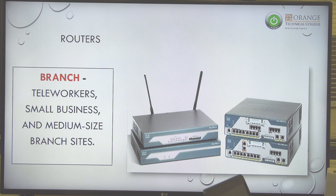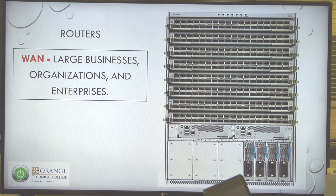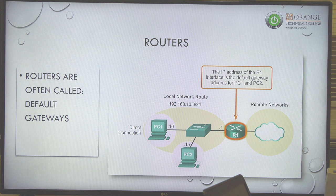As we leave the home and get into serious small business, you'll see routers from Cisco, HP, Teltrend, and Dell, which has a whole line of small business routers for branch sites. Then in WANs, you get into very large organizations — routers that cost probably half a million dollars each. For service providers like CenturyLink, AT&T, and Verizon, routers can cost around a million dollars each and are incredibly powerful.